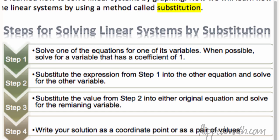All right, so here are the steps real quick. First step, we're going to solve one of the equations for one of the variables. When possible, solve for the variable that has a coefficient of one. That's just going to be the easiest thing to do. Step two, substitute the expression from step one into the other equation and you solve for the other variable. Step three, substitute the value from step two into either of the original equations and you solve for the remaining variable. And then, as always, you write your solution as a coordinate point or you can write it as a pair of values.